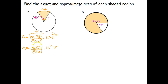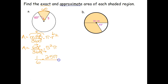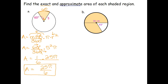Since both values end in zero, we can reduce 60 over 360 to 6 over 36. Dividing both by 6 gives us 1 over 6. Then 5 squared is 25, so we have 1 over 6 times 25π. Combining into one numerator: 1 times 25π is 25π over 6. Since 25 divided by 6 gives a decimal, we leave the exact answer as 25π over 6 meters squared.